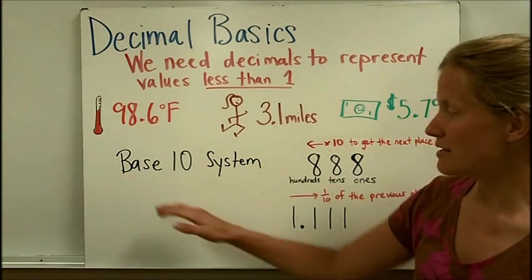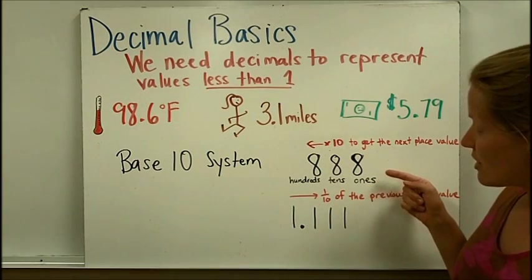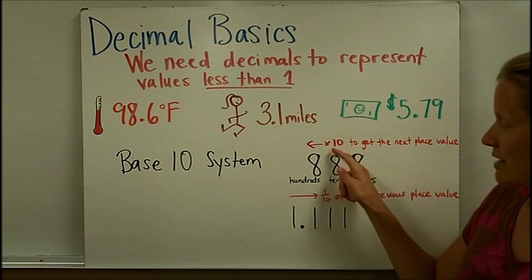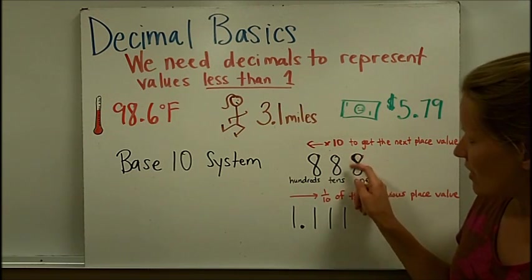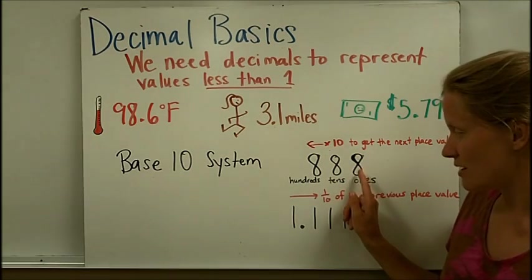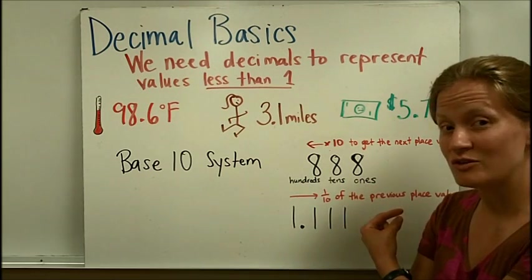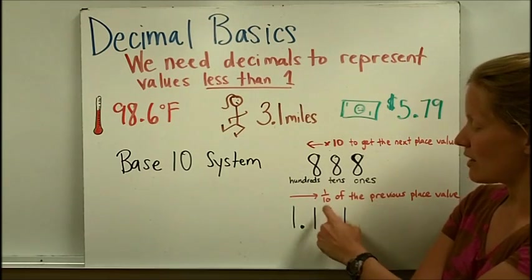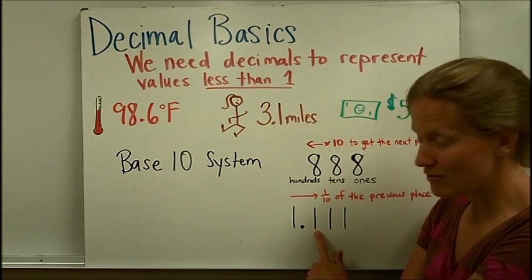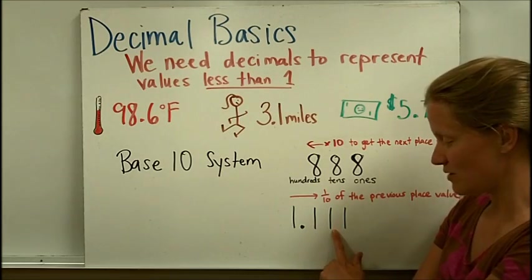The reason that decimals work is because of our base 10 system, like we heard when we talked about in the place value video. In that place value basics video, you heard that as we go to the left, each place value is 10 times the one before it. So the value of the 8 in the 1's place is 8. This one is 10 times this one, so this 8 is worth 80 compared to 8 here. Well, going in the opposite direction, the direction that you're moving to for decimals, each place value going to the right is 1 tenth of the previous place value. So this 1 in the tenths place is going to be 1 tenths the value of this. This 1 is 1 tenths the value of this 1, and this tenth is 1 tenths the value of this place value here.